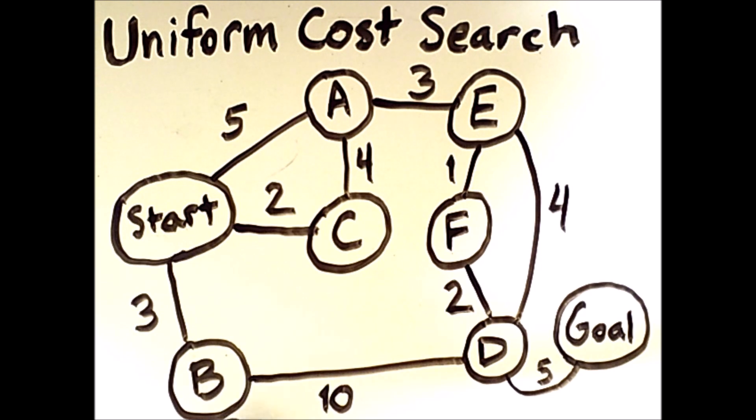The states are the labeled nodes, and the edges represent actions that transition between the connected states. The cost of the actions are the numerical weights that are on the weighted edges.